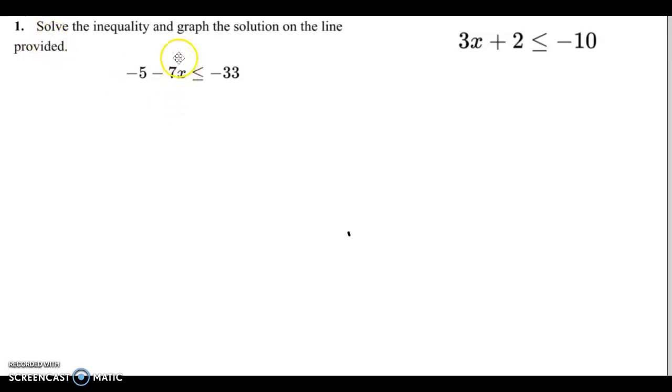Alright, so here it says solve the inequality and then graph the solution on the line provided. So this is very similar to just a regular two-step equation. We'll do the opposite. We're going to add 5 on both sides. Isolate the negative 7x. We'll end up with different signs, find the difference.